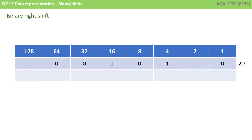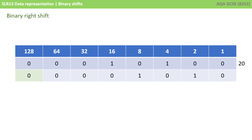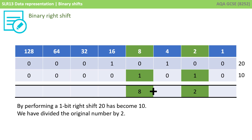A binary right-shift is exactly the same, just in the other direction. We start by shifting each digit right the number of places we need. So, doing a right-shift of 1, the 0 from the 128 column ends up in the 64 column. The 0 in the 64 column ends up right-shifted one place in the 32, and so on and so forth. The final 0 in the 1 column disappears off the right-hand side, and we pad the leading space under the 128 column with a 0. In effect, we have half the number — we have divided it by 2 when we shift to the right by one bit.